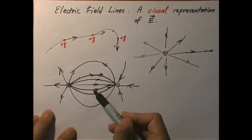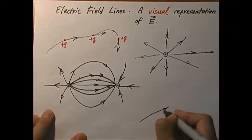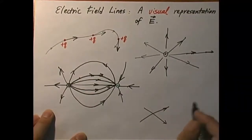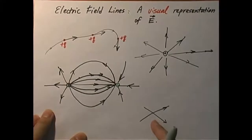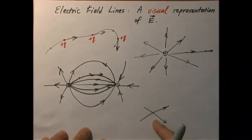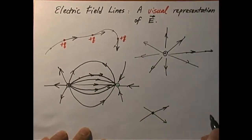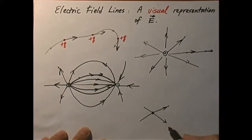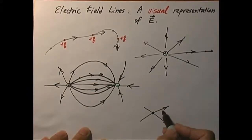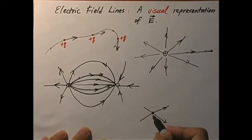One thing about electric field lines is that they will never cross each other. If you get a field line like this and another like that crossing — this is wrong, it never happens. Why? Imagine putting a positive particle at the crossing point. By definition, the positive charge will experience a force along the direction of the field line, but there are two field lines here. It cannot point both this way and that way in the same location. So field lines will never cross each other.